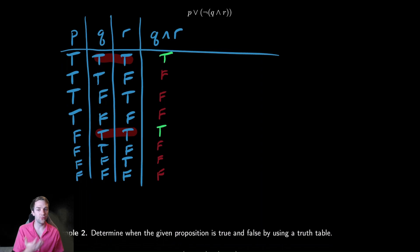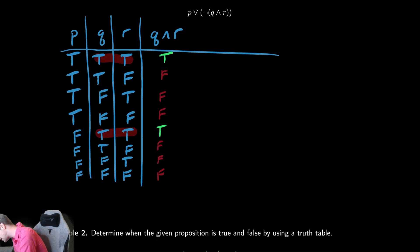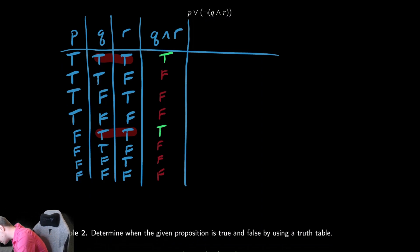I always find it very easy to mess myself up if I don't create intermediate columns. We then need to negate that statement — moving out of the parentheses, we have Q and R and then not of that. So I'm going to create another column for not(Q and R), which is just false everywhere it was true, and true everywhere it was false.